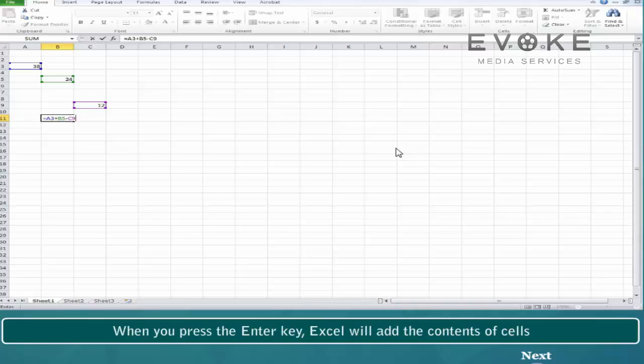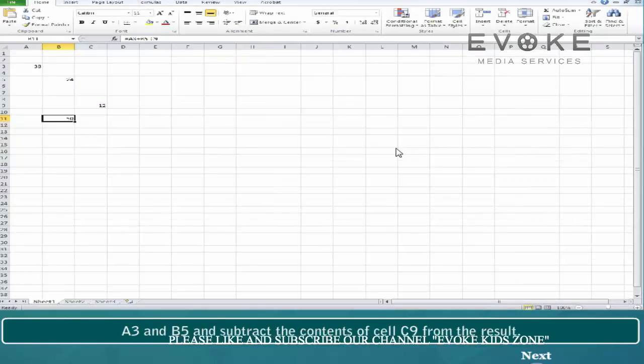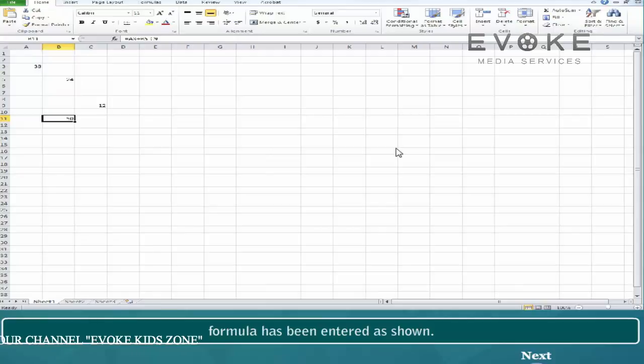When you press the Enter key, Excel will add the contents of cells A3 and B5 and subtract the contents of cell C9 from the result. The final result will be shown as the contents of the cell in which the formula has been entered as shown.